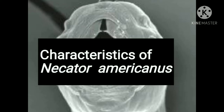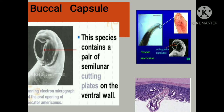Now let's talk about the characteristics of Necator americanus. It has a buccal capsule, which is the structure that connects the oral opening of the mouth to the esophagus. This species contains a pair of semilunar cutting plates on the ventral wall. This buccal capsule is used to attach better to the intestines of their host. It has a pair of cutting plates in the front and back portion surrounding the front margin of the buccal capsule. This cutting plate is responsible for cutting the intestinal wall to cause bleeding.